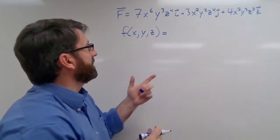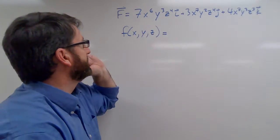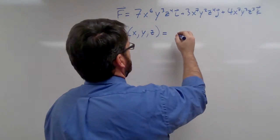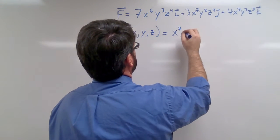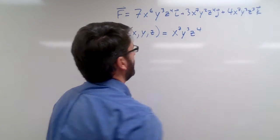Let's start by taking the antiderivative of this piece. That's going to be x to the 7th, y to the 3rd, z to the 4th.